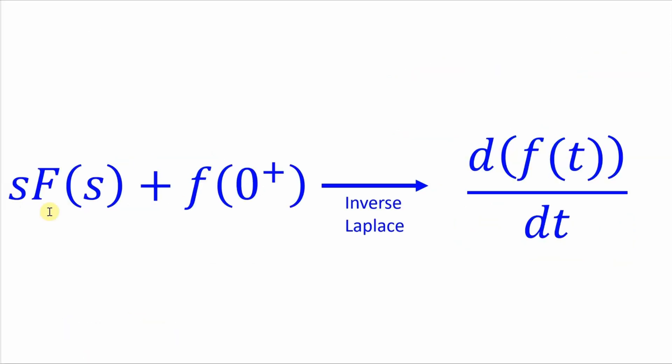The transform that we want to use says that the inverse Laplace transform of s times some function in the s domain plus the initial value in the time domain is equal to the derivative of the function in the time domain, and since this f of t is sinusoidal we can say that this is equal to zero.